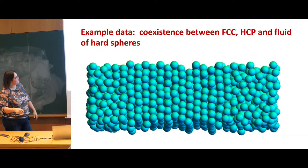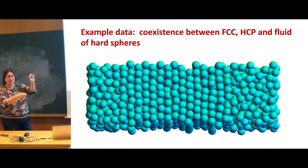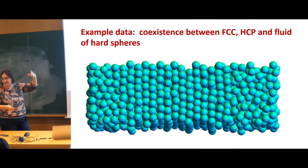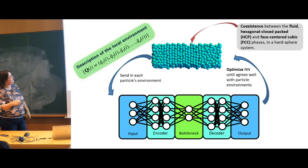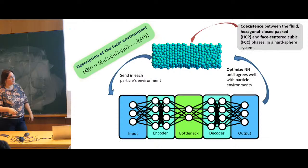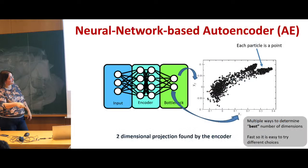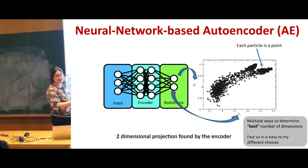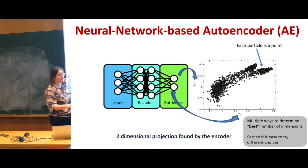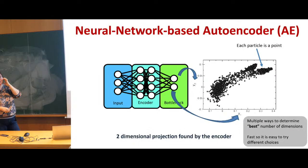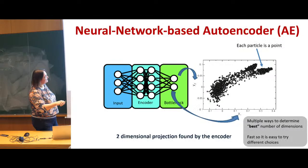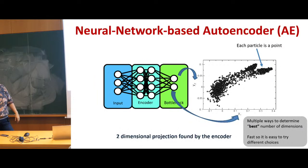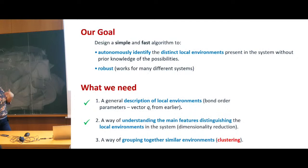Once you've learned this function, you throw half of it out — the decoder side — take your input, encode, and go down through the bottleneck: that's your dimensionality reduction. Going back to the picture of spheres with a fluid and two different crystals — for every particle, you write down the local environment in terms of bond order parameters. If I go down to a dimension of two and plot every particle in this lower dimension, your eyes already see that it looks like it has three different regions: a big density here, a big density there, and a big density there.